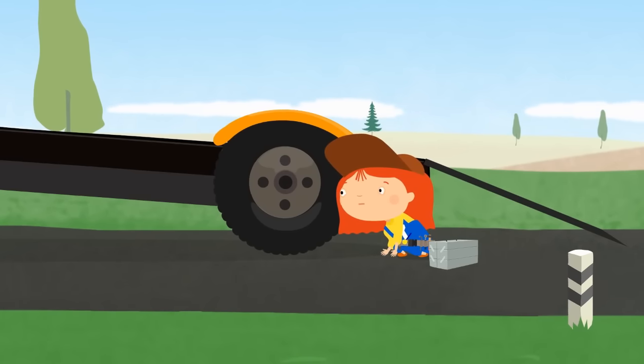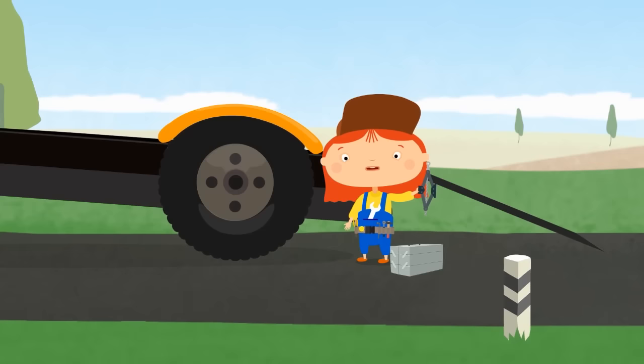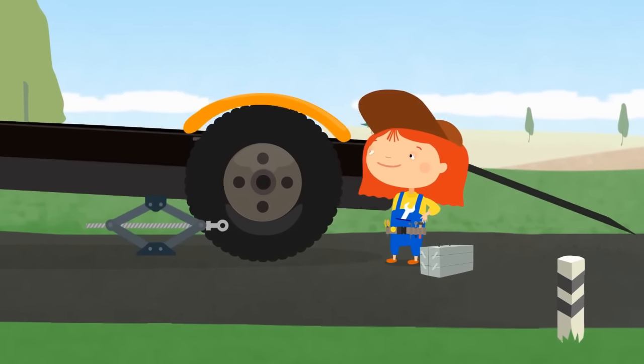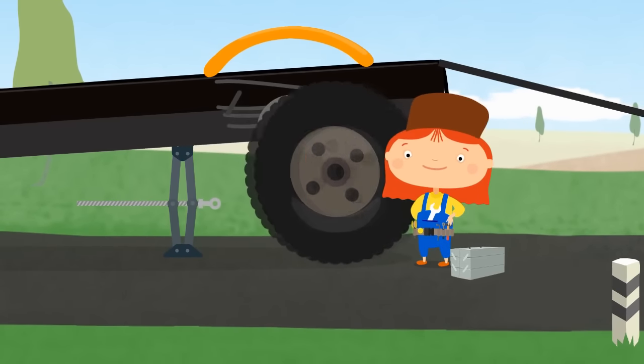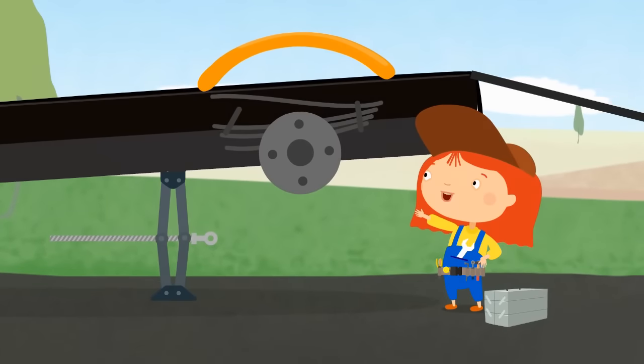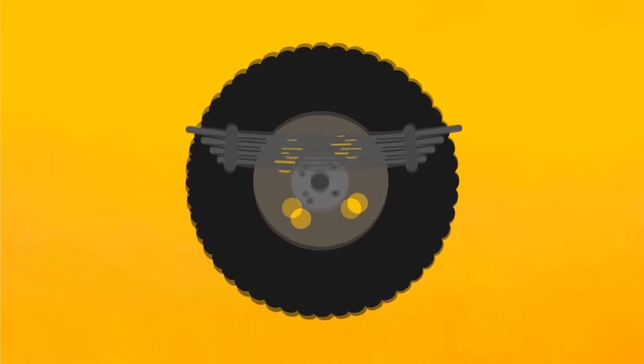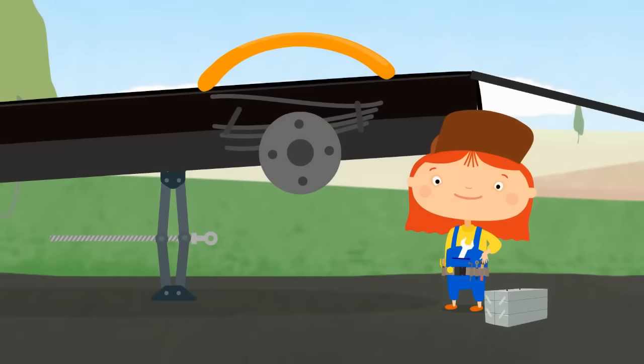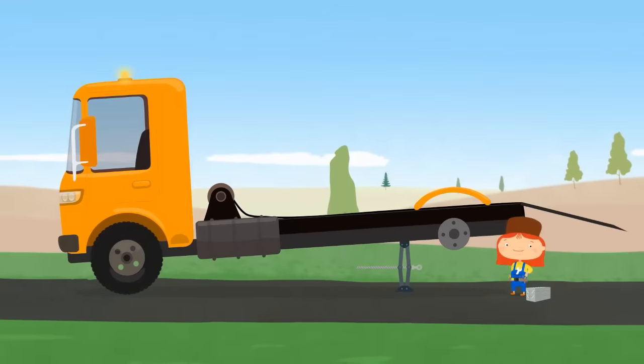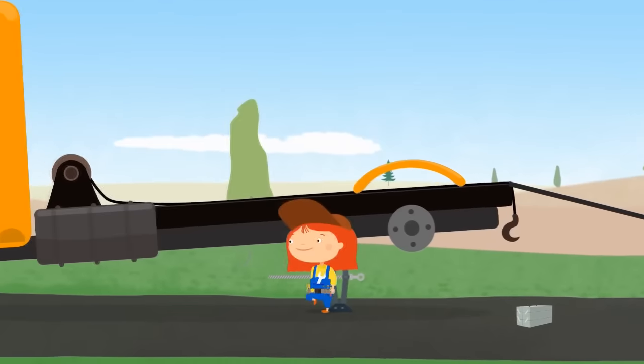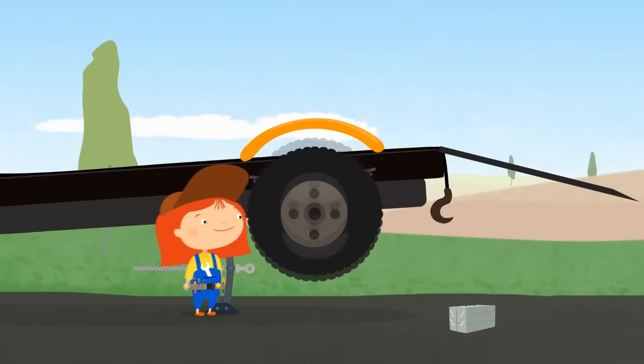I see. We need to remove the wheel. To do this, let's jack up the vehicle. Excellent! Here is the problem. The spring is broken. This part allows the vehicle to go over any potholes gently. Let's take off the broken spring and put on a new one. And put the wheel in place.